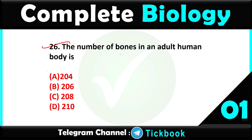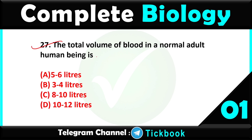Question twenty-six: the number of bones in an adult human body is — option number B is the right answer: 206. Question twenty-seven: the total volume of blood in a normal adult human being is — option number A, 5 to 6 liters.